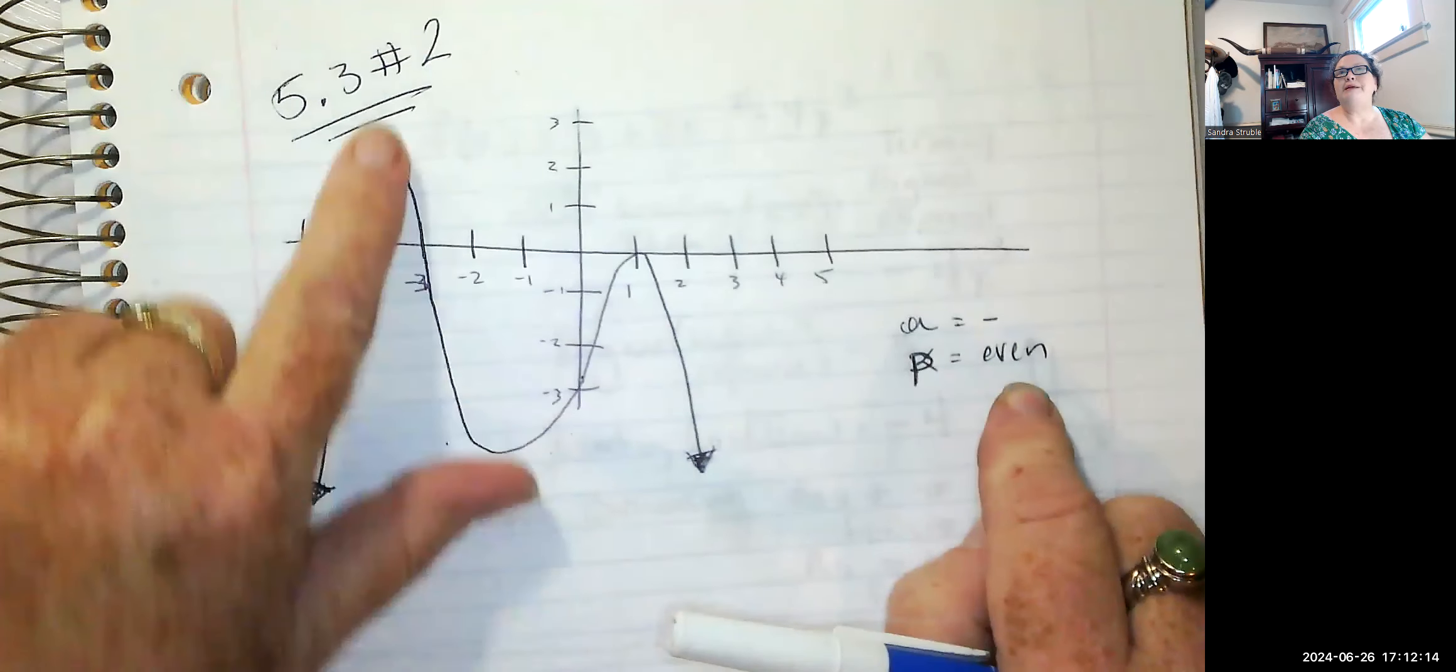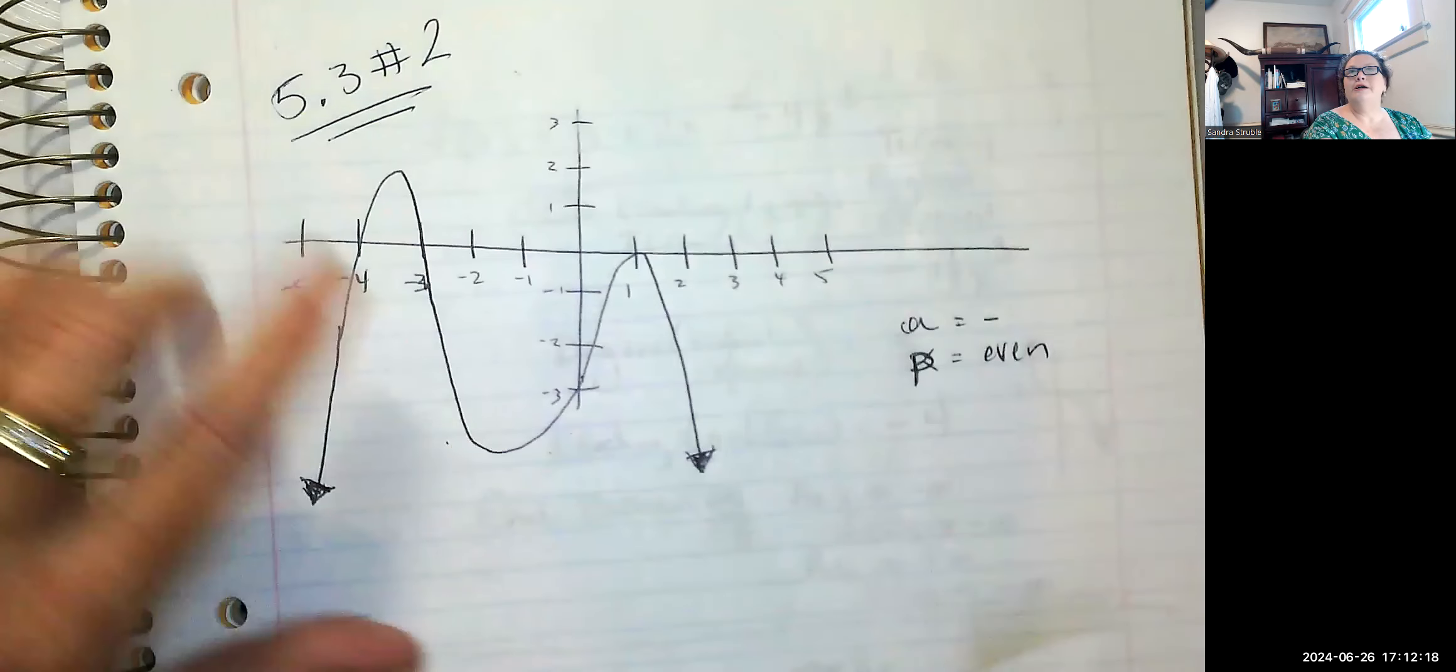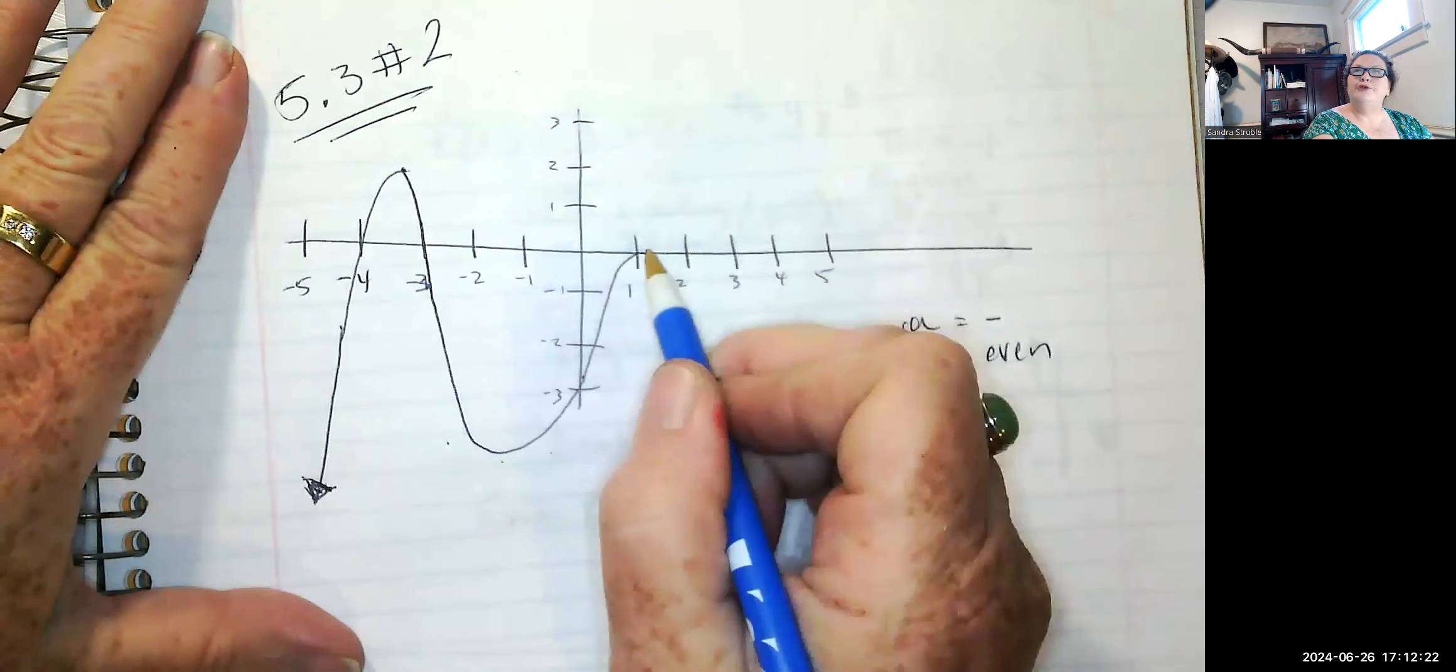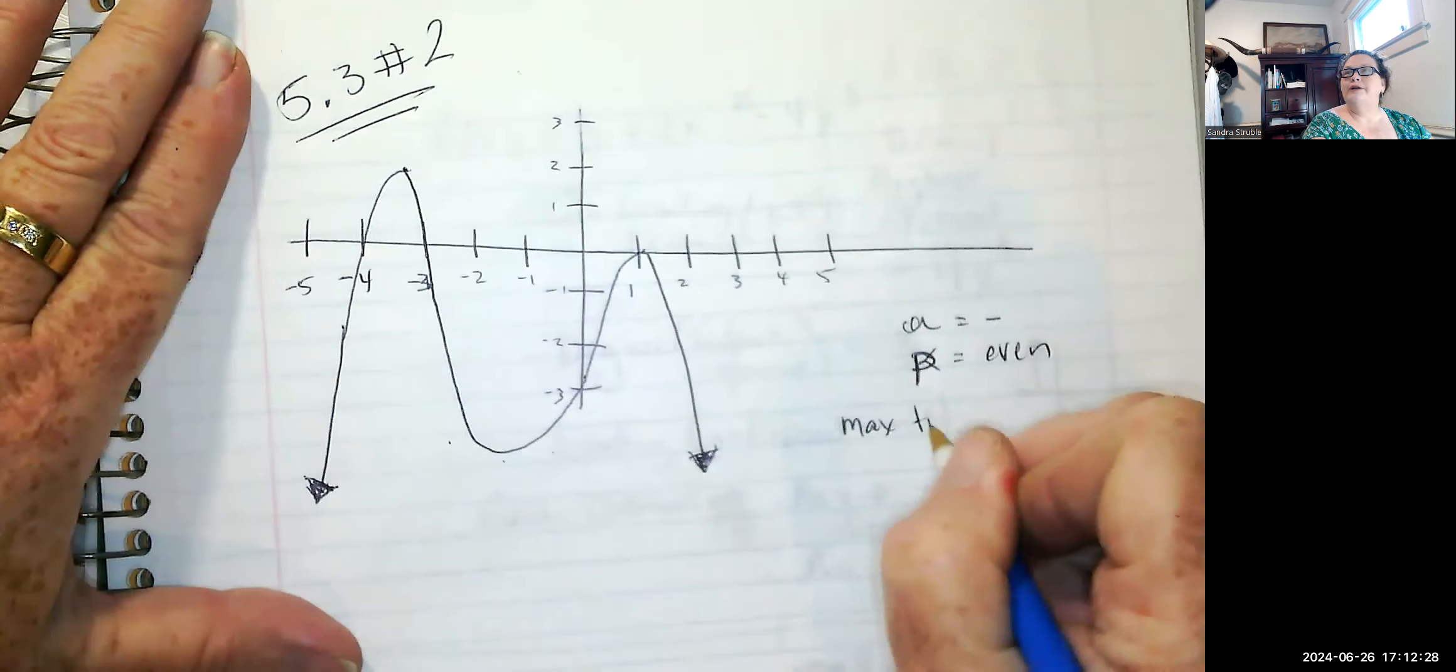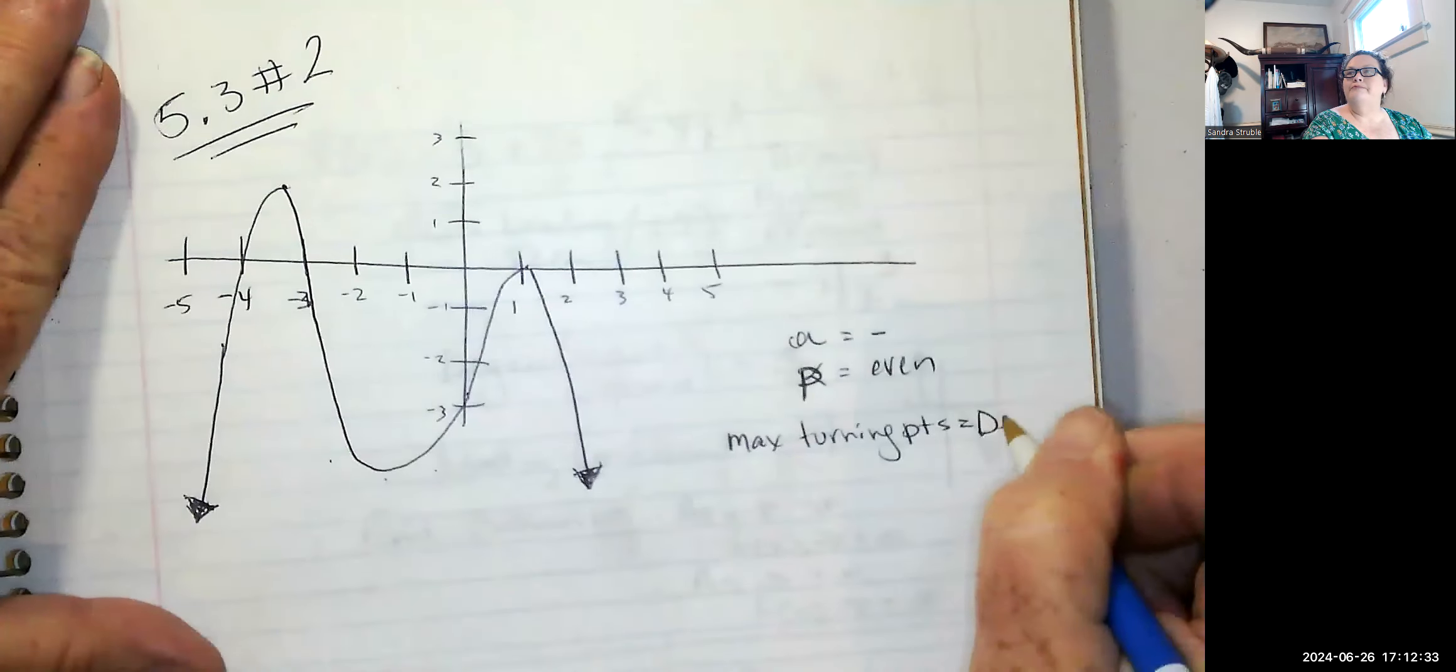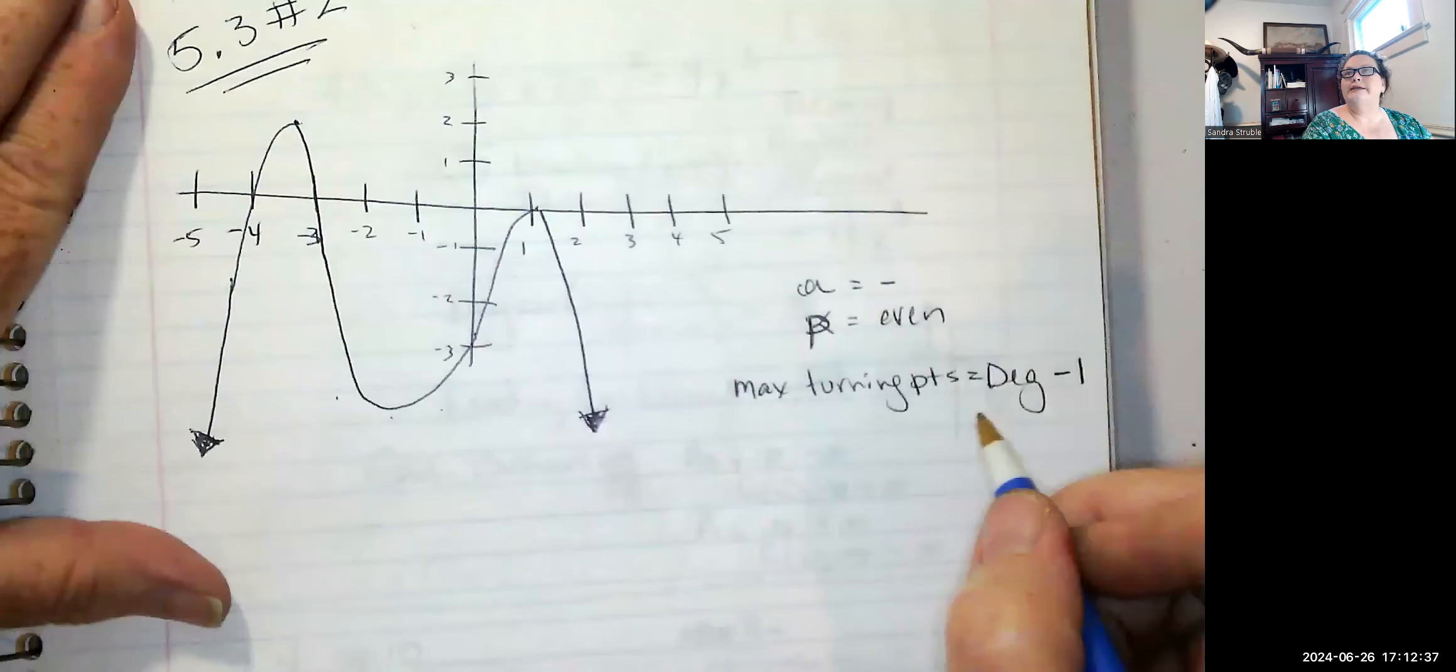So it's at least a two, probably more than that, based on the fact that we've got multiple turning points here. So let's look at that as well. We've got one, two, three turning points. With three turning points, we know the max turning point is equal to the degree minus one.